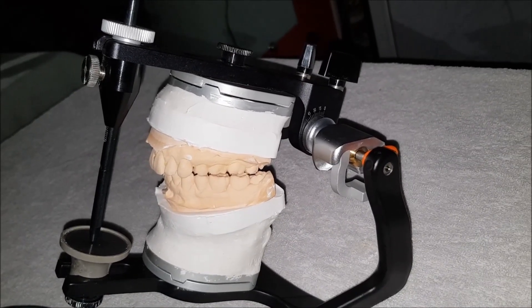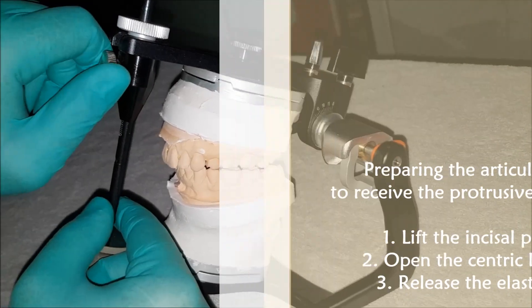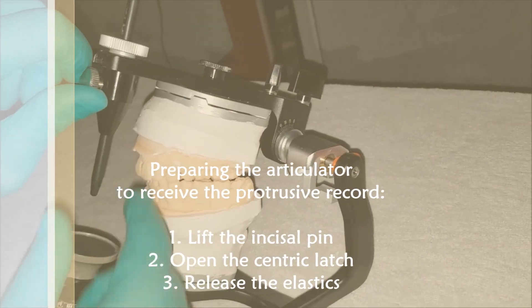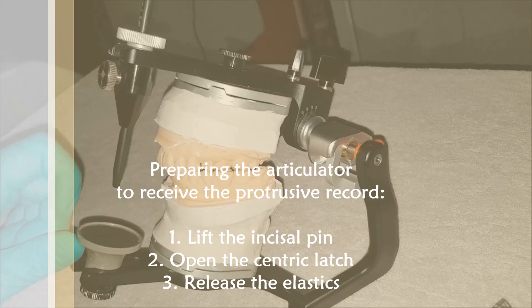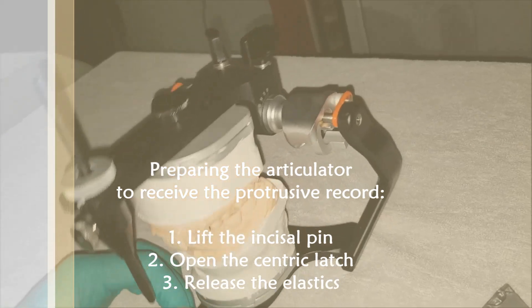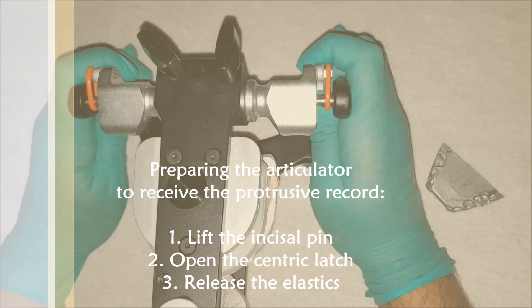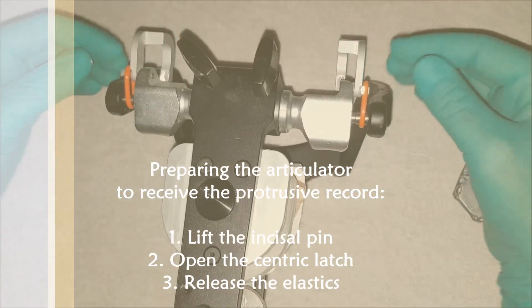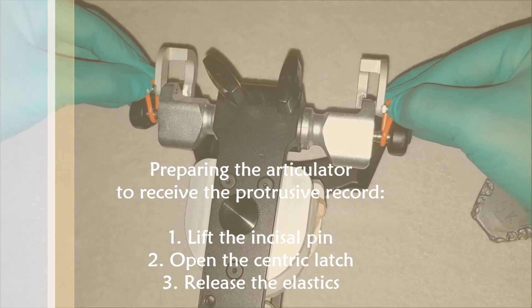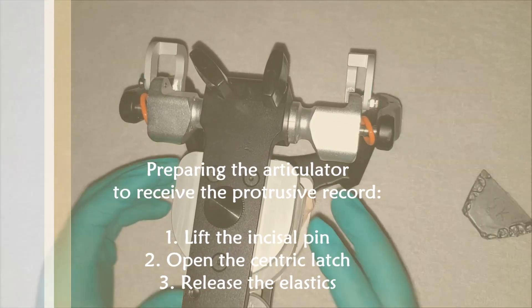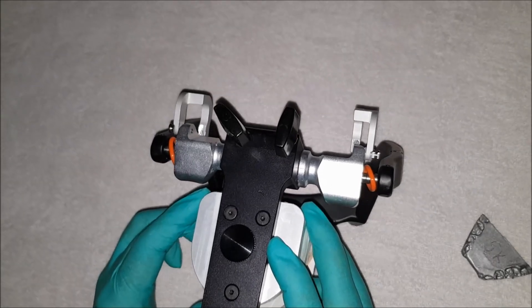For this, three things need to be done to prepare the articulator. First, we lift up the incisal pin so that it is no longer touching the incisal table. As I come on top of the articulator, here we open up what is called the centric latch. Once the centric latch is opened, the elastics are also released. This allows for the entire upper frame to be moved the way we wish.